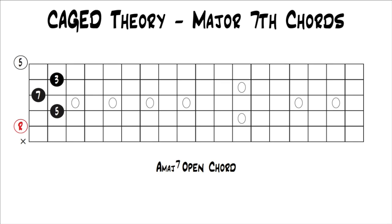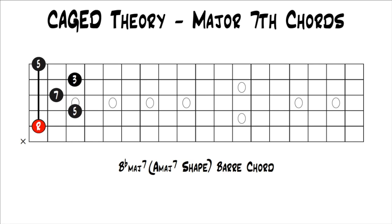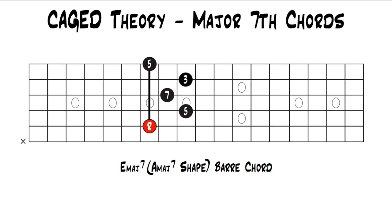Next one is A. So we're talking about an A major 7 chord. This is the A major 7 open chord. If we move that up half a step, we get a B flat major 7 bar chord using the A major 7 shape. This is a really common bar chord, used all the time — definitely learn it if you don't know it. It's a really useful, nice-sounding bar chord. Wherever your roots are, that's the name of the chord. If we move the lowest note up to the 7th fret, we'd end up with an E major 7 bar chord using the A major 7 shape.